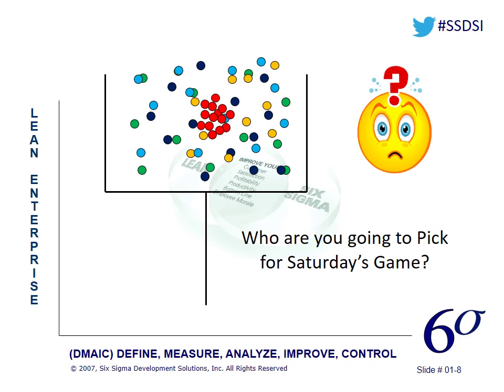Six Sigma is really about understanding those 500 kicks and understanding the variation between the kickers and all the inputs that created those kicks. That helps us really understand the process through data. It can help us understand how those four kickers can become as good as that fifth kicker by identifying the key inputs we need to improve on. That coach in an organization is the green belt, the black belt, the change agents. Their job is really to start looking at that data — like that coach looked at the data of the ball going through the goal — and help start understanding the process through data.